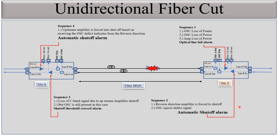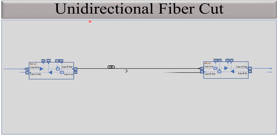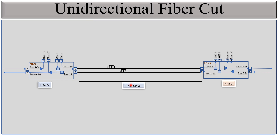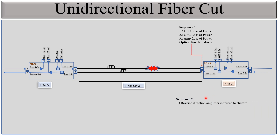We are focusing on the automatic set-off alarm, which appears because an optical line fail alarm appears on the upper direction of the amplifier on the same side. The sequence is: optical line fail alarm appears on this amplifier port number 8; then the reverse direction amplifier is shut off; OSC injects a defect signal into port 5; and from port 5, the automatic set-off alarm appears on port number 6.